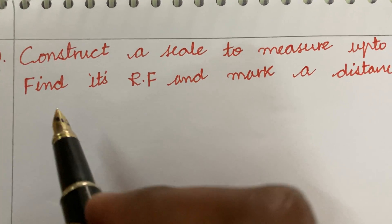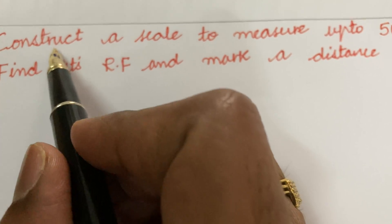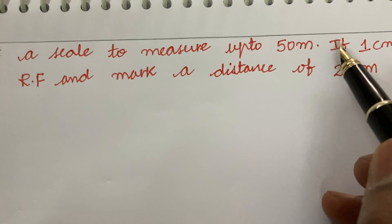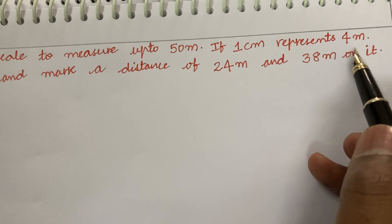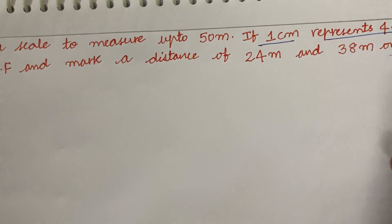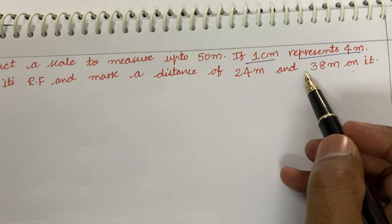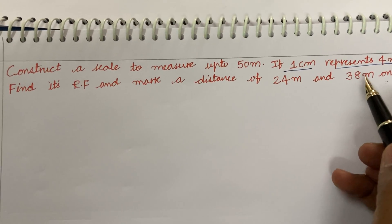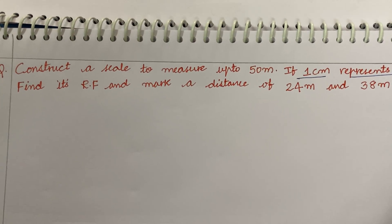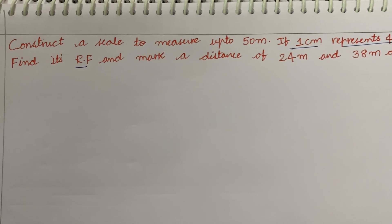Welcome back students. In this video I am going to cover one more problem related to the concept of plane scales in engineering graphics. The question is: construct a scale to measure up to 50 meters if one centimeter represents four meters. Find its RF and mark a distance of 24 meters and 38 meters on it. In this problem, unlike the earlier question, the RF is not directly given.